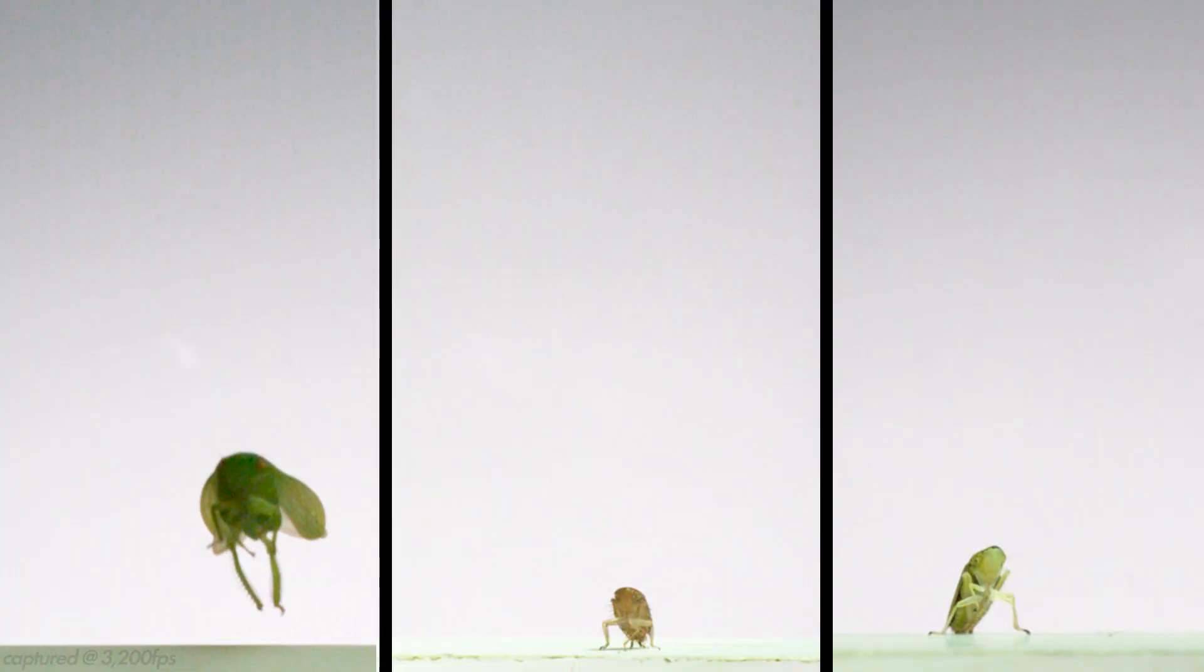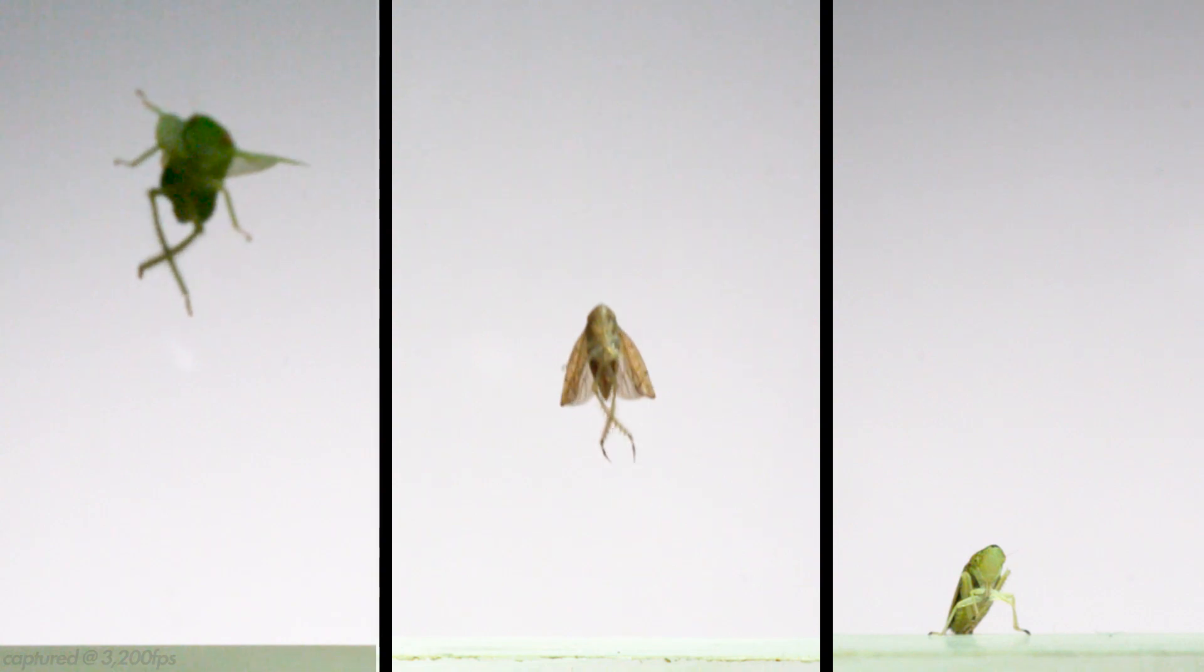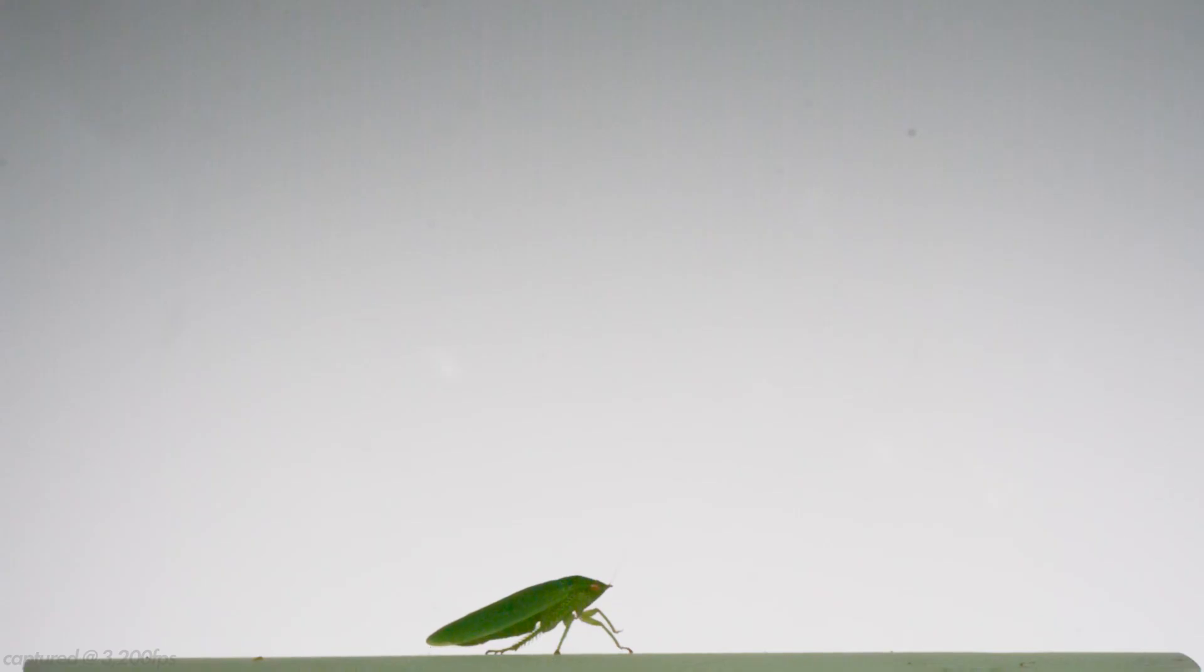One thing I really like about leafhopper jumps is how they link their legs by pushing the tips of them together like this when they go in and push off the ground into a jump. In terms of speed, in this sequence, it takes the leafhopper just over 6 milliseconds to accelerate its body off the ground and into a jump. It accelerates at a rate of 148 meters per second squared, which is equivalent to experiencing just under 15 Gs.